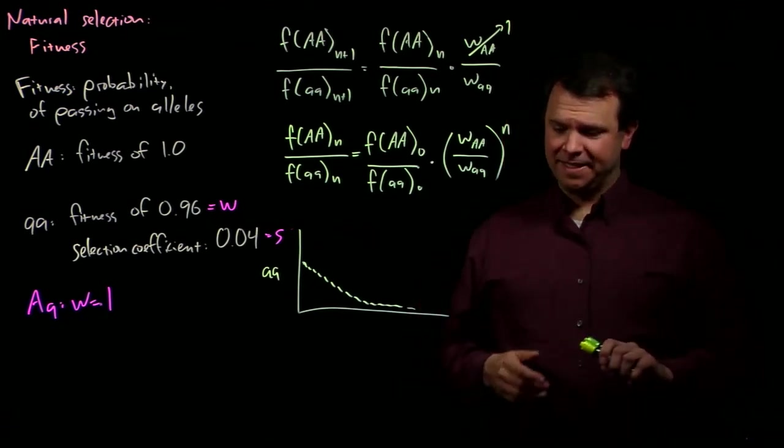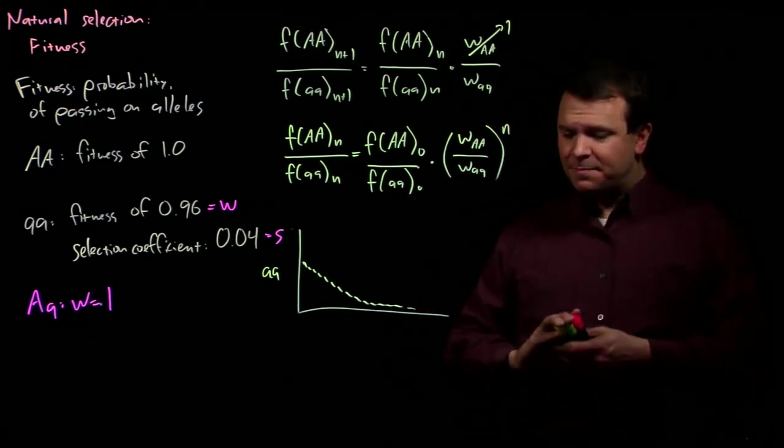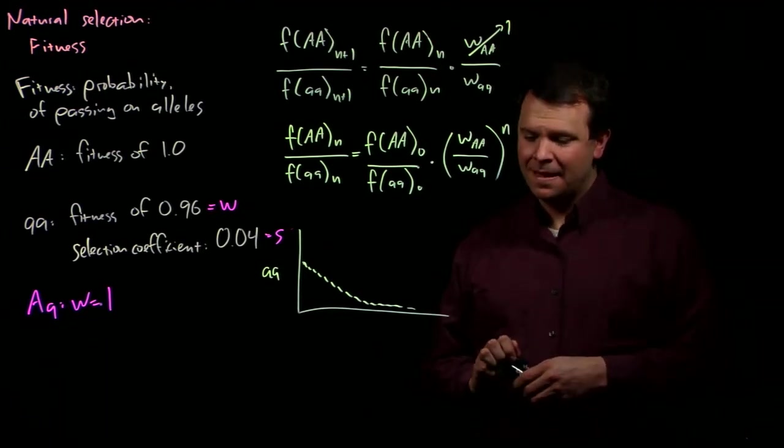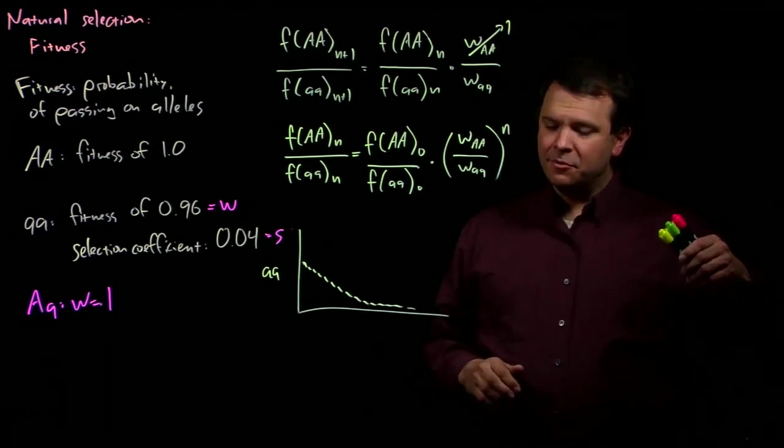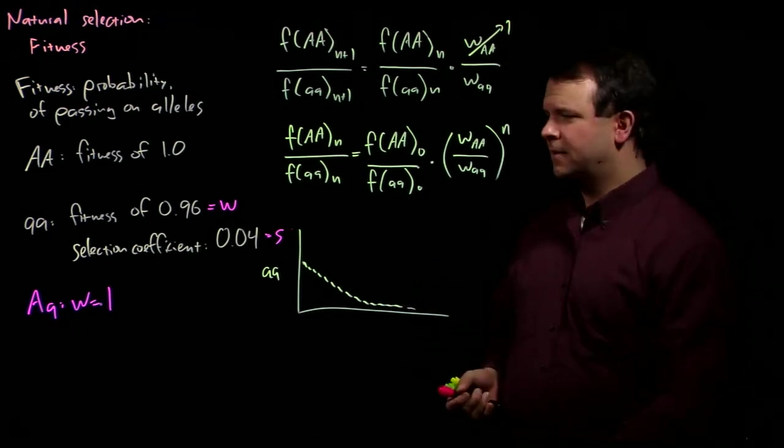And the second reason that deleterious alleles stick around is because they also arise spontaneously via mutation. The balance between mutation on one hand and selection on the other is our next topic.